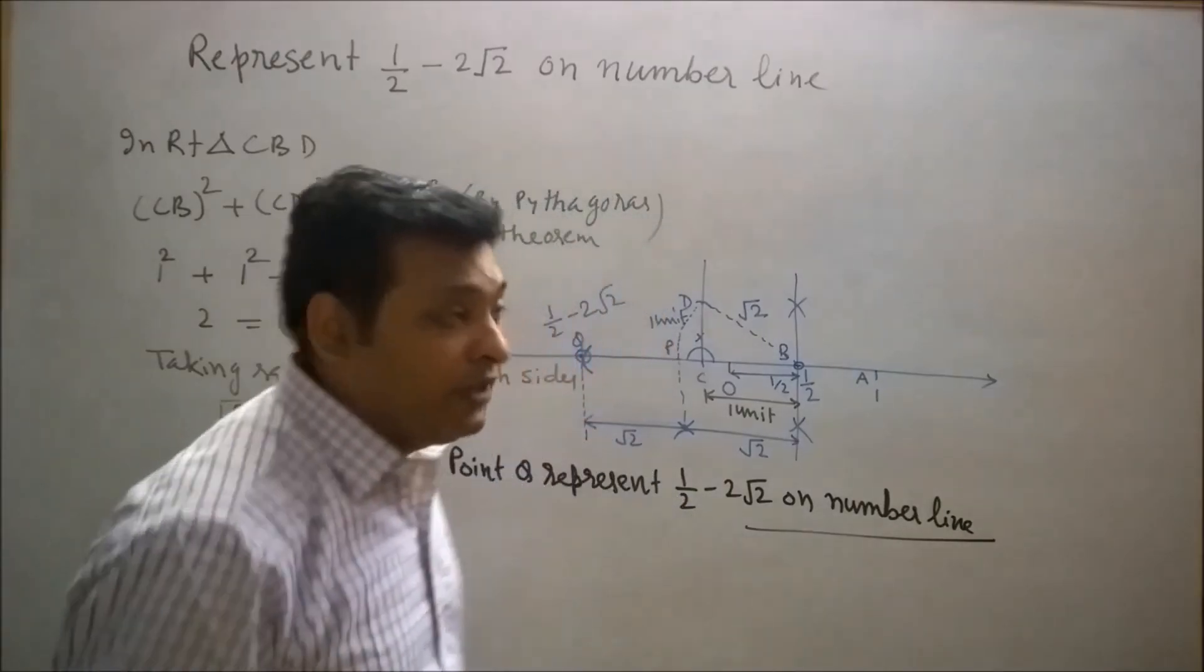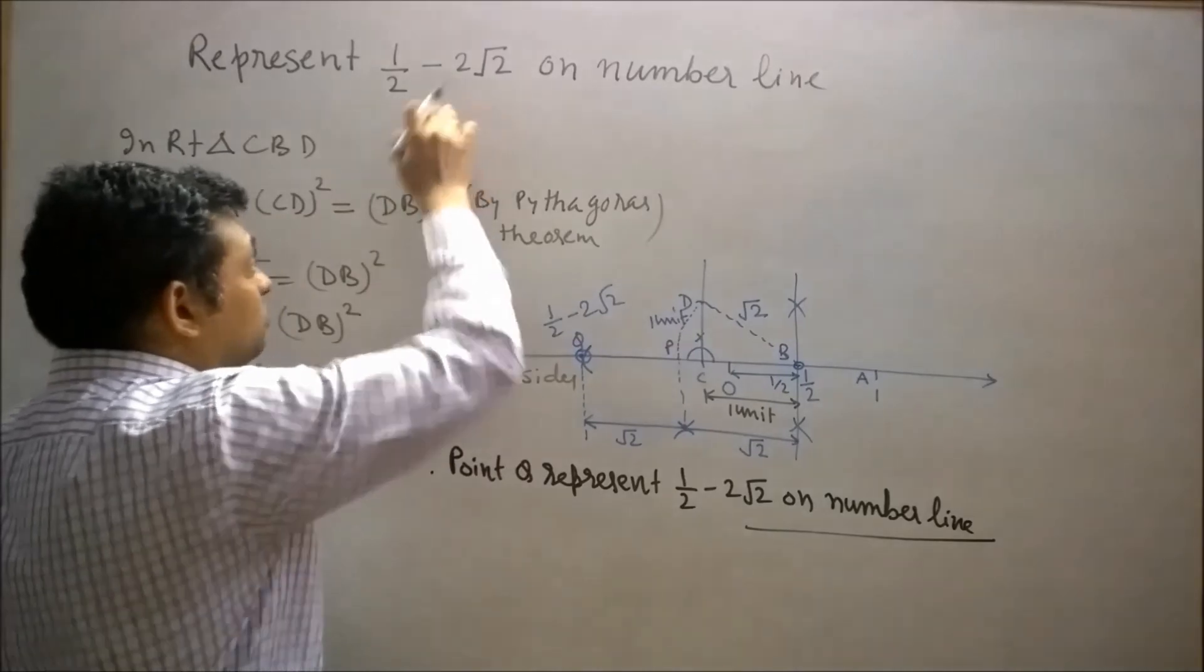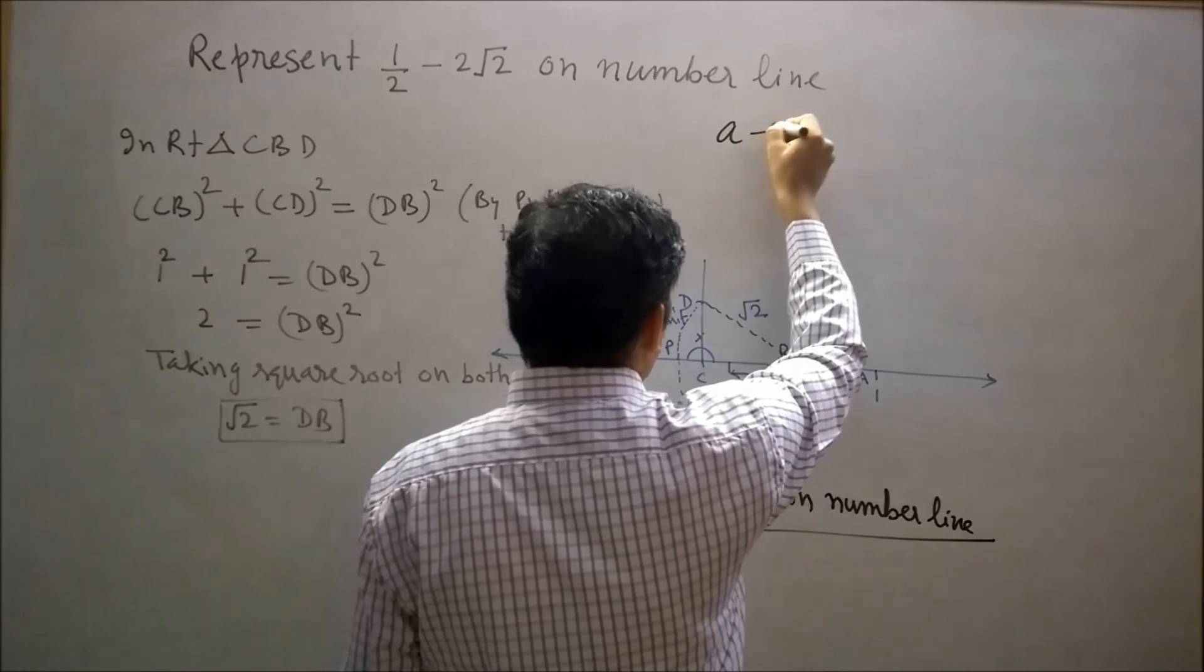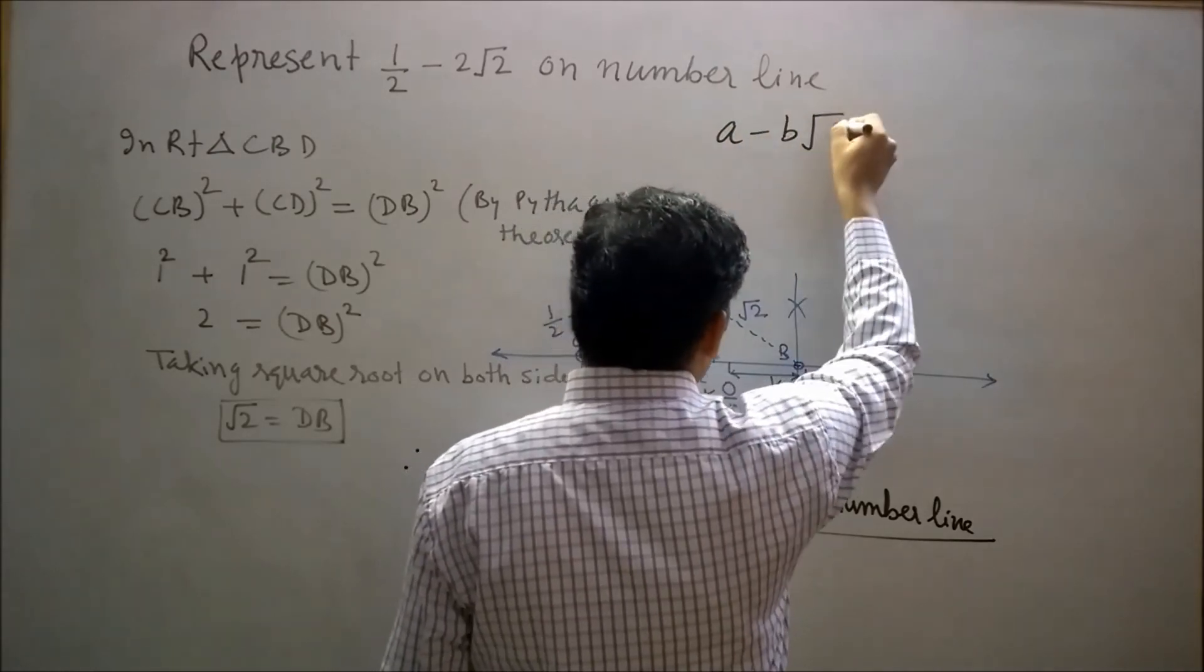Now with the help of geometrical representation of half minus 2 root 2, we are able to represent every irrational number which is in the form of a minus b root c on number line.